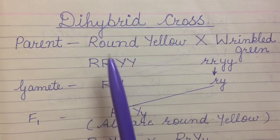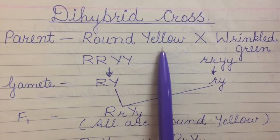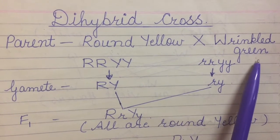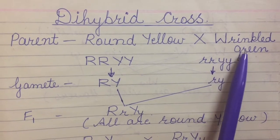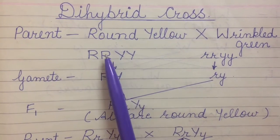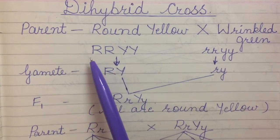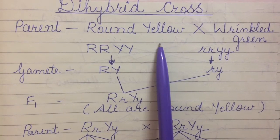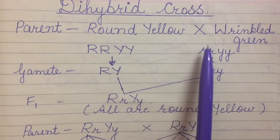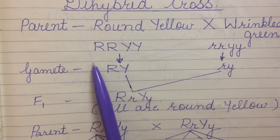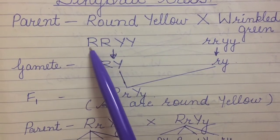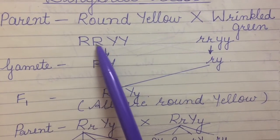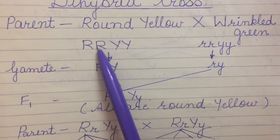Roundness is the dominant character; similarly yellow is also a dominant character. Roundness is dominant over wrinkled, and yellow is dominant over green. Wrinkled and green are the recessive traits or characters. Dominant characters we represent by capital letters — round is dominant so we show this by two alleles: capital R and capital R. Similarly yellow is dominant: capital Y capital Y. Recessive traits by small r small r, small y small y. We take two alleles because one comes from each parent. In ko hum allele kehte hain — jo ek individual ko apne parent se milta hai.